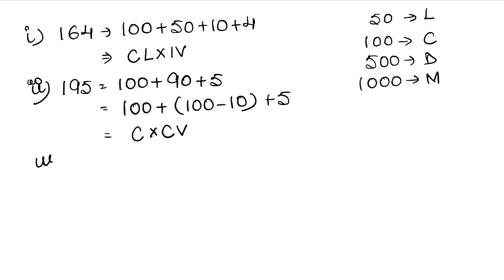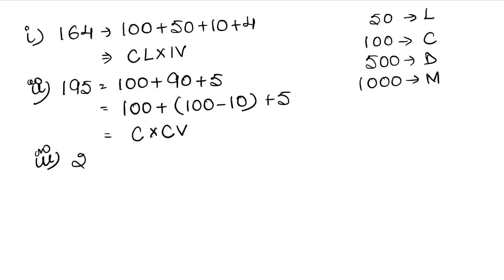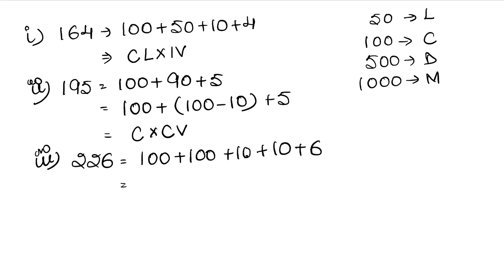Let's do the third part now. We write 226. How do we write it? 226 is 100 plus 100 plus 10 plus 6, which is 200 plus 10 plus 6. So 100 we write as C, C again for the second 100, 10 as X, and 6 as 5 plus 1, which is VI. So the answer is CCXVI.